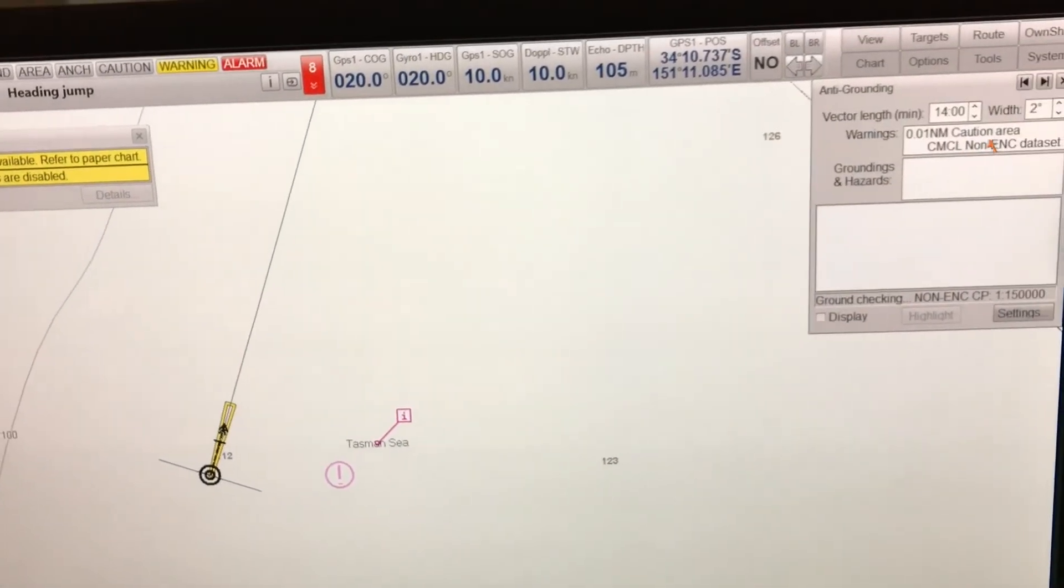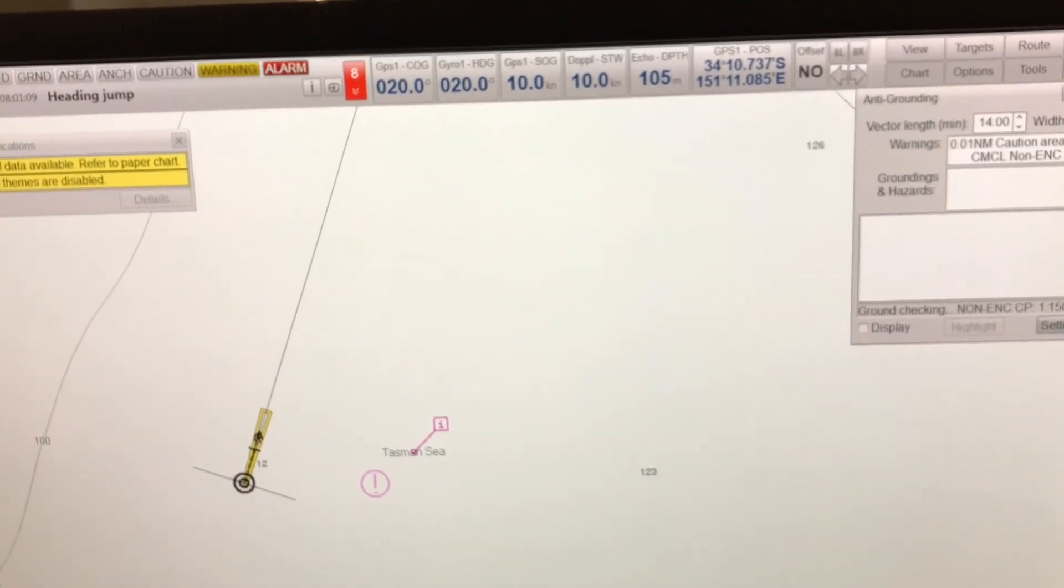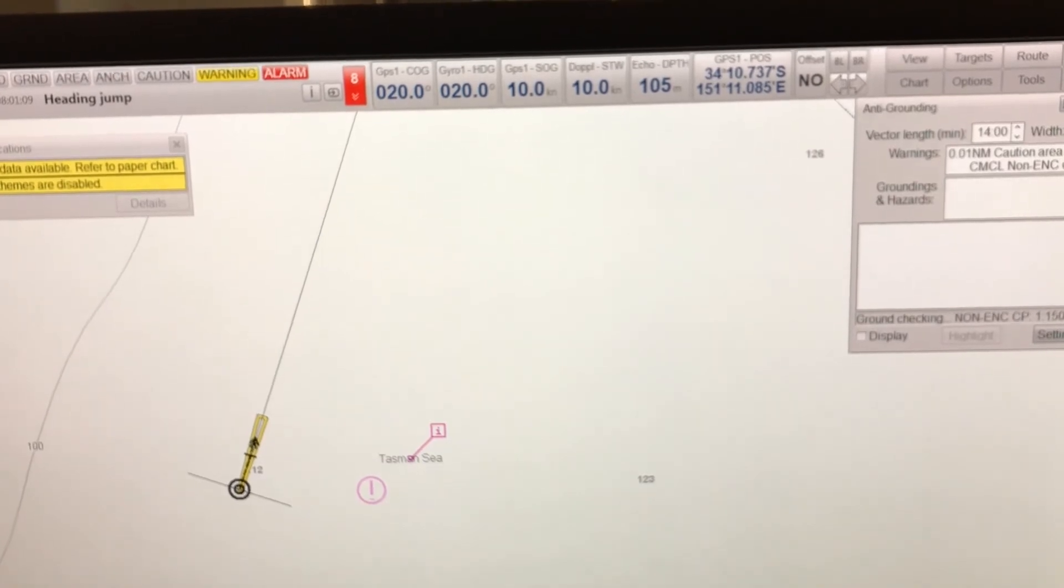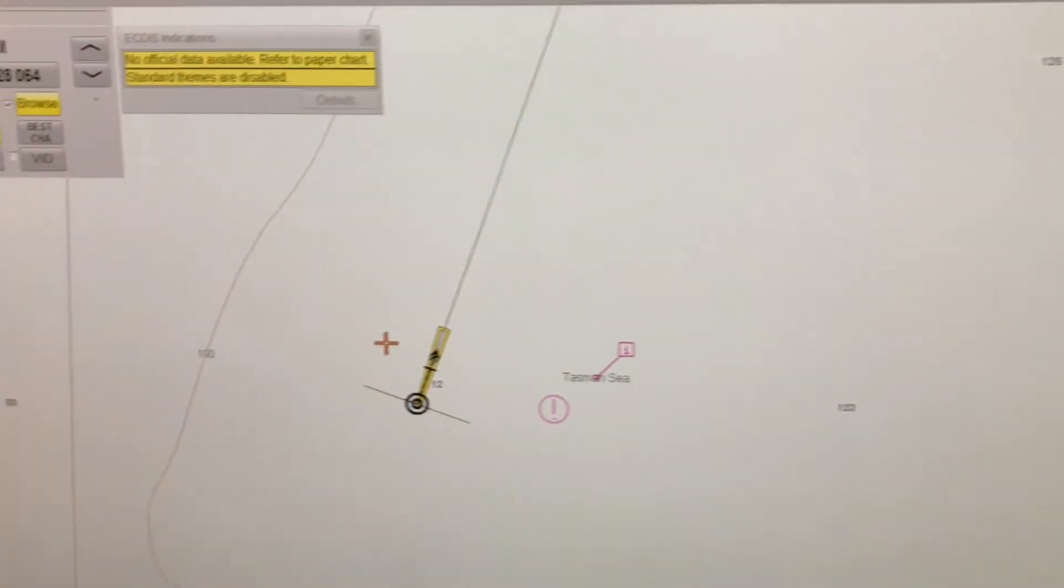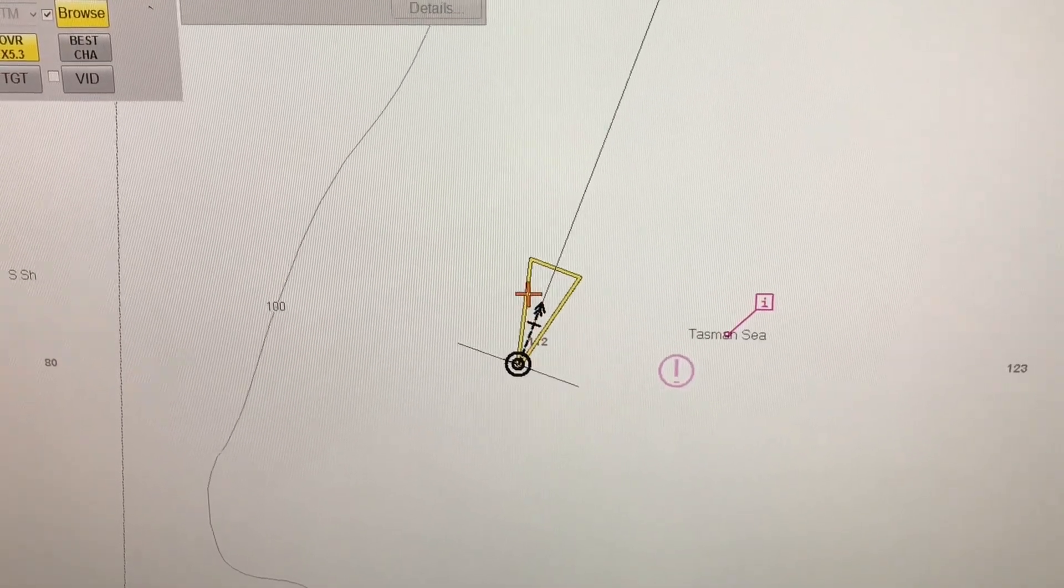So you can see here when I adjusted the vector length or the width, how the anti-grounding tool is changing in parameters. It takes a bit of time. I have changed the vector width, it takes a bit of time and then suddenly you can see that change there. I'll show you some more changes as we go along.